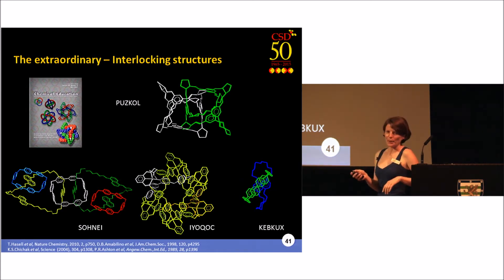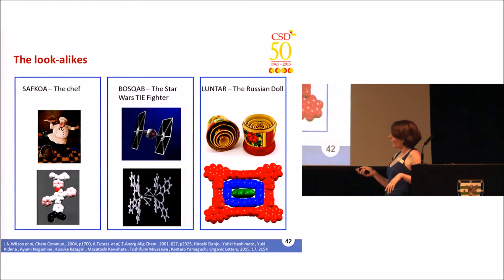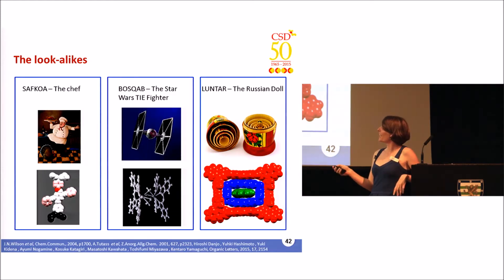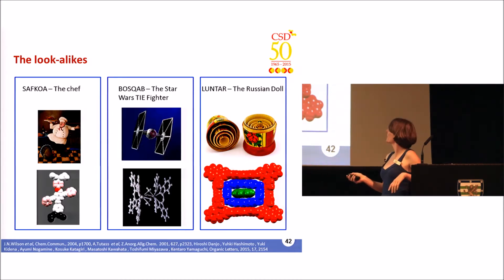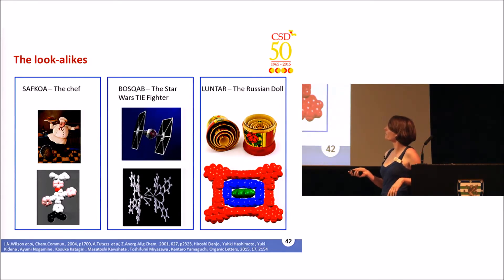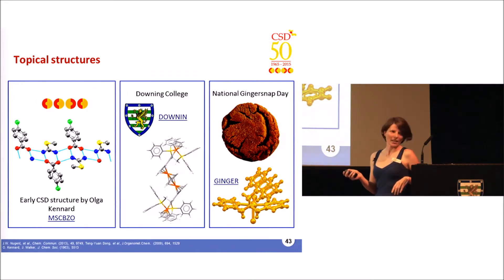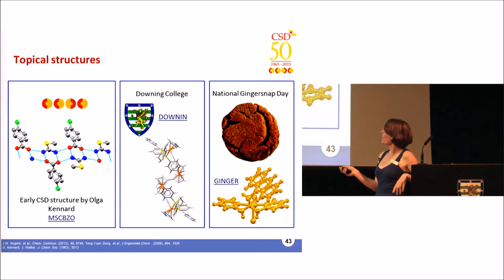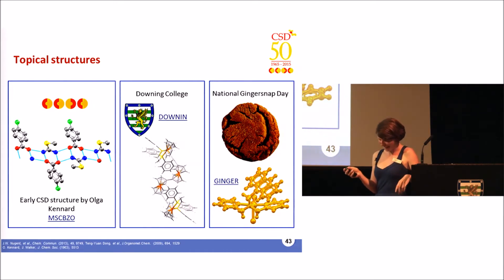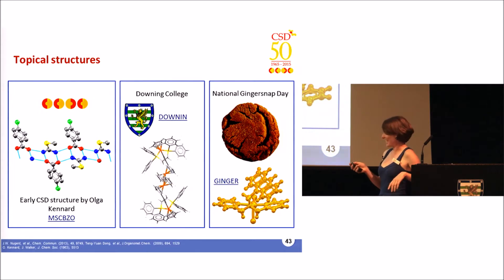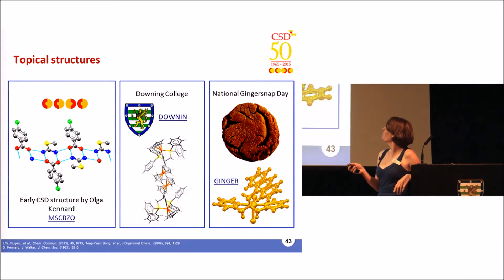There are also some wonderfully complex molecules in the CSD, including interlocking structures like the so-called olympiadane. There are also more trivial but entertaining examples — we of course have some nano-Putins in the CSD, and this chef is a fine example. If you look hard enough you can find the Star Wars TIE fighter, and here's a 3D printout of that structure. We also have packing on a molecular scale with some really neat crystal structures. Because we have so many structures, we can have a structure for every day and every event.